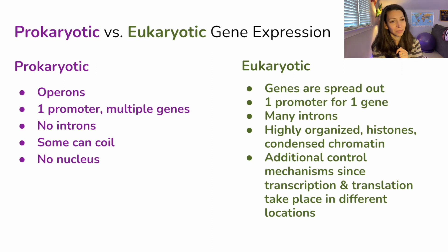In eukaryotic gene expression, we can have these genes that are spread out along long linear chromosomes. We have one promoter for one gene. There are many introns that are removed, and we can have exons that are spliced to create that mature mRNA that's going to go and then be translated into a protein. It's highly organized. We have our chromatin wrapped around histones, and there are additional control mechanisms because transcription and translation are taking place in different locations. Remember, transcription is in the nucleus. Translation is in the ribosomes in the cytoplasm.